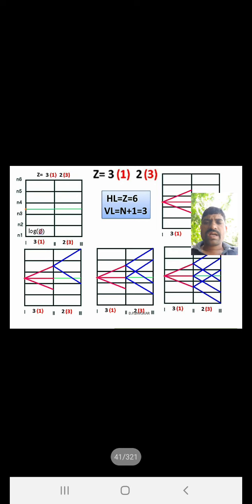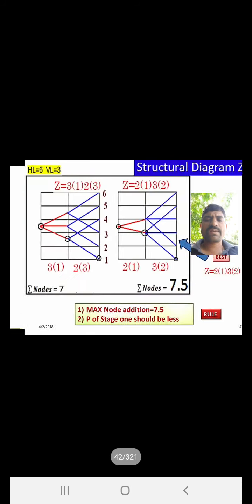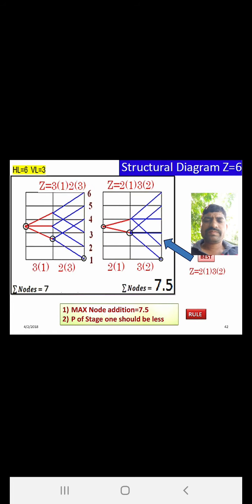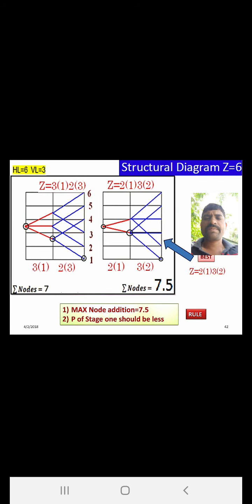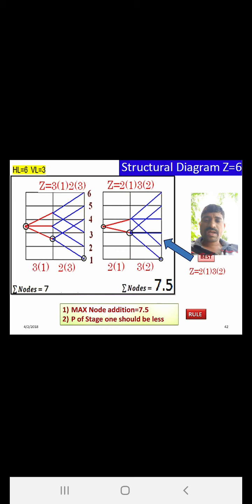Practice drawing structural diagrams for different structural formulas. To calculate the summation of nodes: for z = 6 (e.g., 2×3 or 3×2), draw six horizontal lines and three vertical lines for input shaft, intermediate shaft, and output shaft. For formula 3×1 × 2×3: start from center, draw three lines with gap = 1 in the first stage.